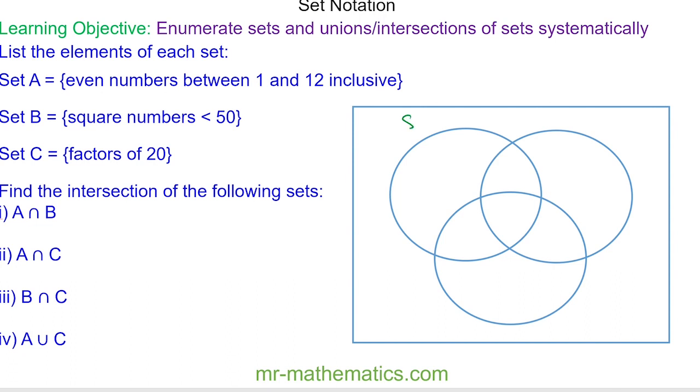Okay, for set A, set B, and set C. We'll start off with set A. The even numbers between 1 and 12 are 2, 4, 6, 8, 10, and 12.